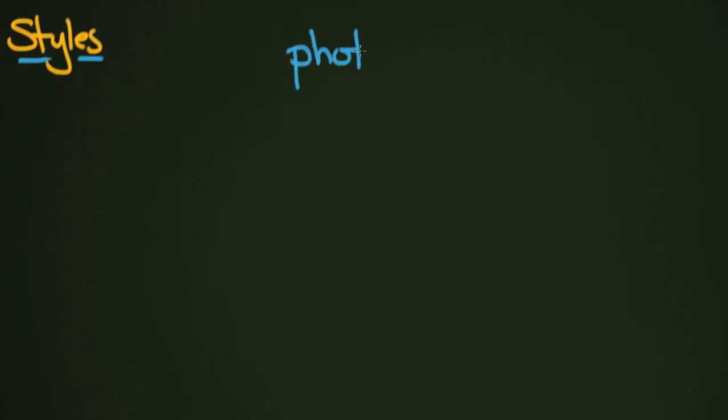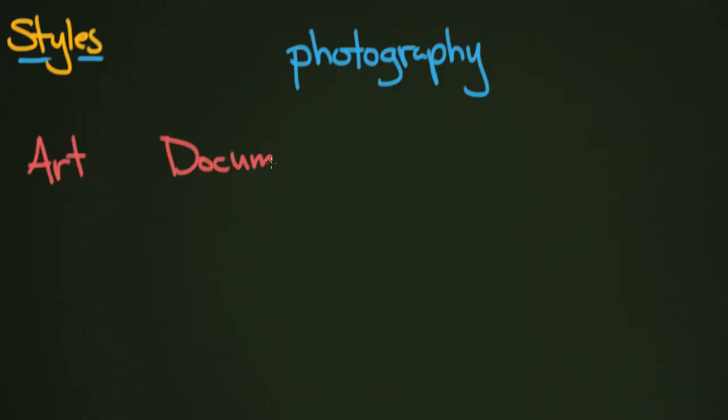Let's take a look at styles of photography. These have a lot to do with approach — not necessarily the look of the photo, but the actual way that the photograph is being made. This is a really important distinction for young photographers to understand. So we've got art photography, documentary photography, and commercial photography.